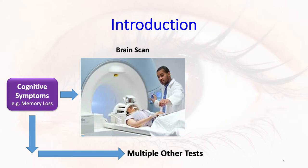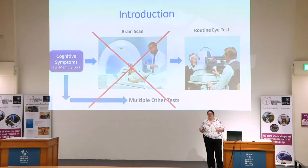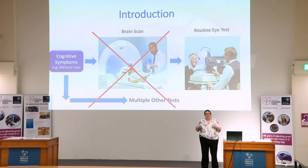So imagine, rather than going through all these tests, you could go to your local opticians and have a quick eye test. They take an image of the back of your eye within several seconds and they can diagnose the condition. Imagine also that you don't have any symptoms and you go to your optometrist — you could get an eye test to find out what you might develop in years to come, because with certain diseases, what really matters is early intervention.